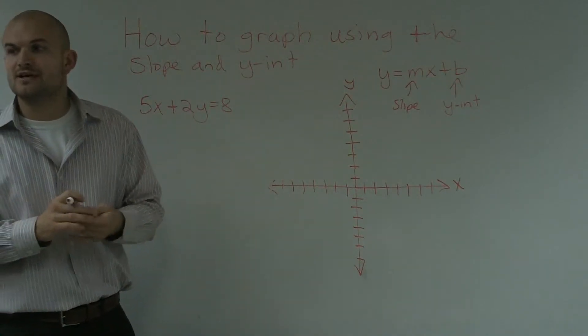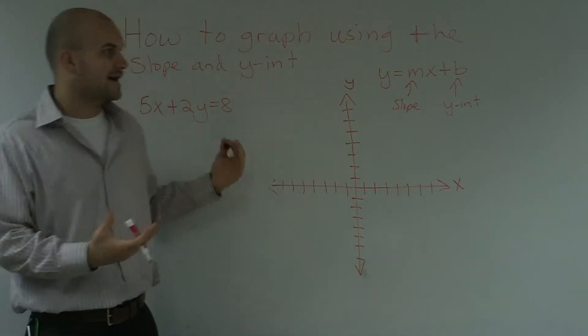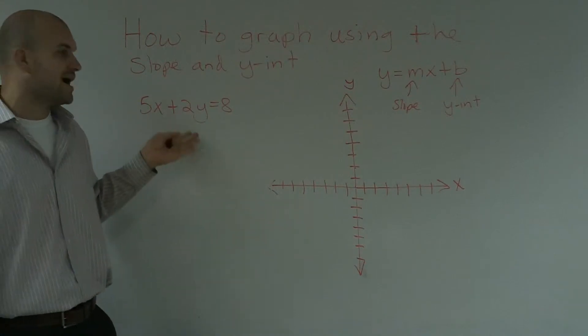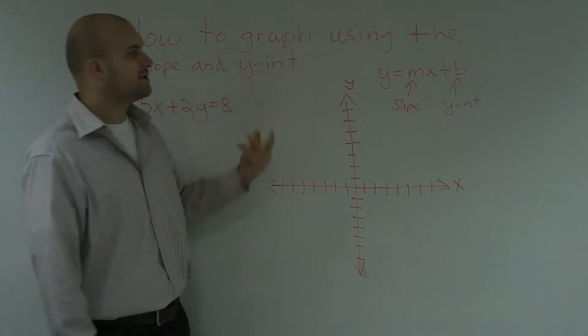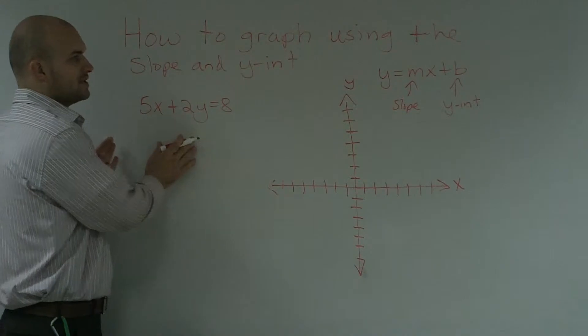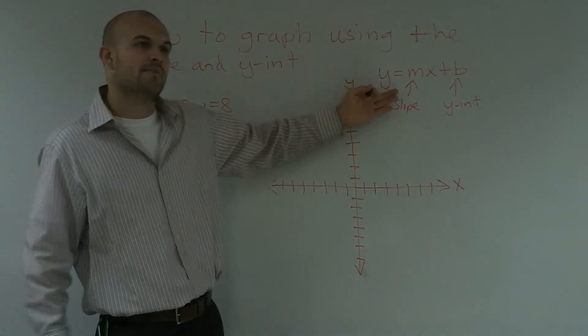However, a lot of times you're going to get intercepts that are fractions and it's not going to be very easy to get an accurate graph using that method. So another method we could use is transforming our equation into slope-intercept form and graphing it from there.